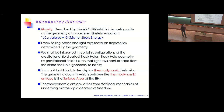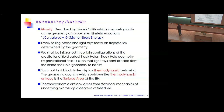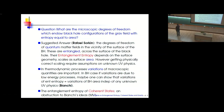It turns out that black holes display thermodynamic behavior. This is very surprising because black holes are simply solutions to some nonlinear partial differential equations — the Einstein equations — invented to describe gravity with no thermodynamic intent. In the case of the black hole, the geometric quantity which behaves like thermodynamic entropy is the surface area of the black hole. This brings us to the question: what are the microscopic degrees of freedom which endow the black hole with an entropy equal to its surface area?